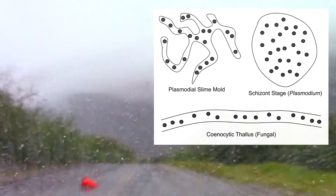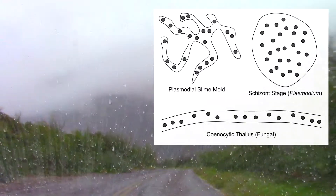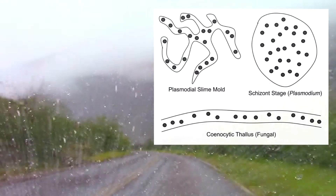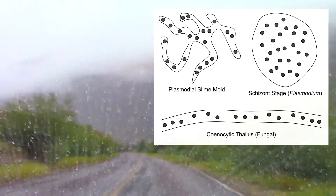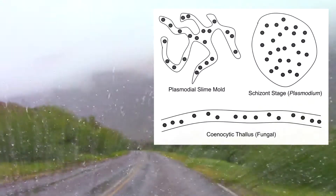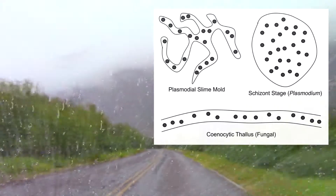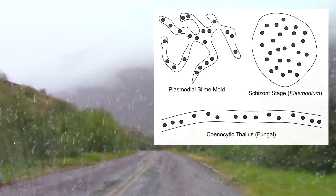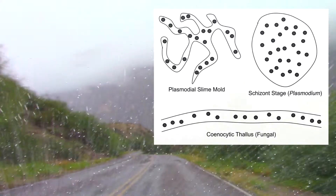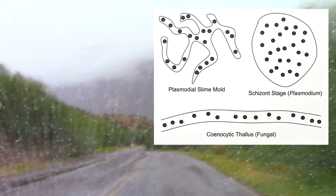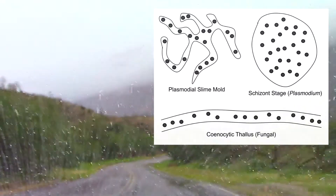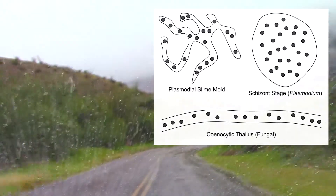You also see the cenocytic state in Plasmodium, the parasite that causes malaria. During their infection of red blood cells, they go through multiple rounds of mitosis without corresponding cytokinesis.